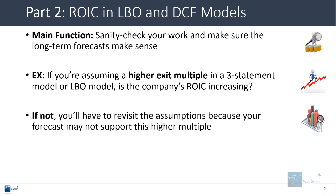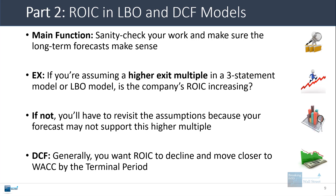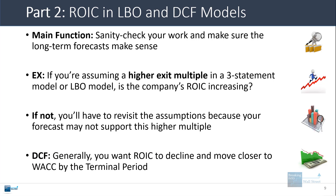If something doesn't make sense — maybe the ROIC is staying the same but the exit multiple is increasing — you may have to revisit your assumptions. For a DCF, generally you want the ROIC to decline and move closer to the weighted average cost of capital by the time you get to the terminal period. No company in the terminal period should really have an ROIC far ahead of the WACC, and it should be a roughly constant difference by the time you reach that point.